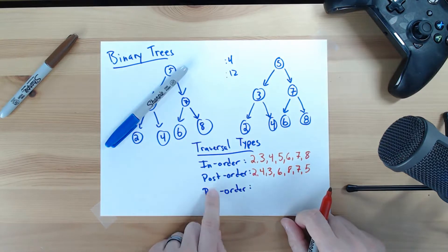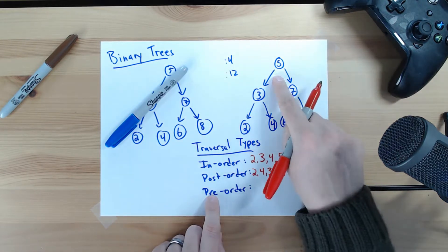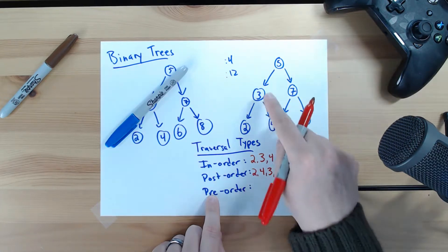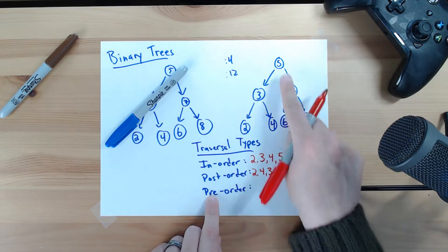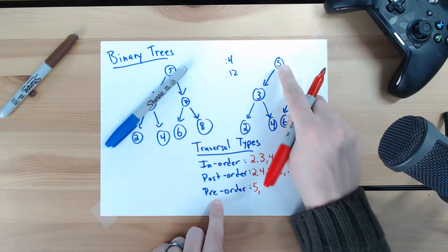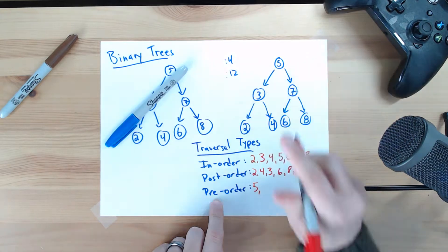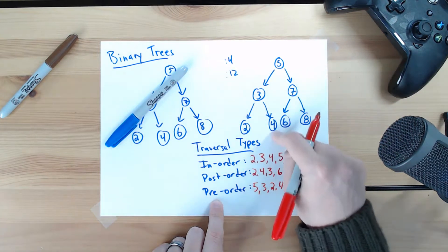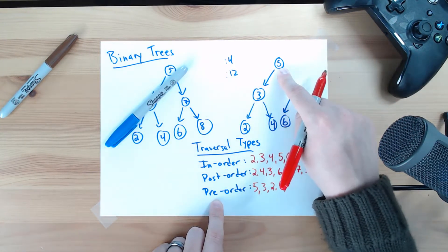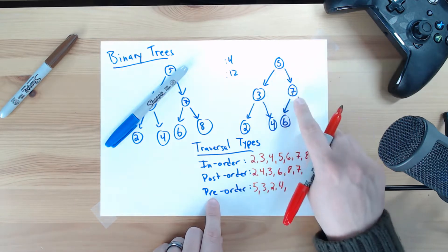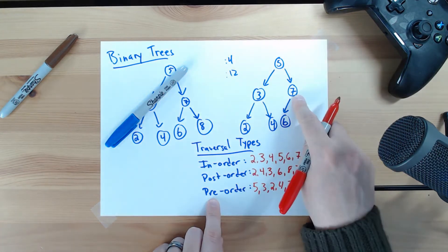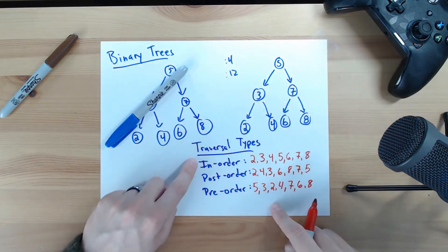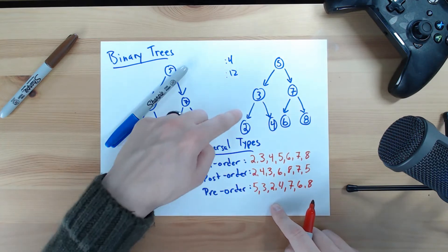Pre-order. Pre-order is the opposite of post-order — it prints the current node first, then the left, then the right. So if we were to do a pre-order print function for this tree, we would start by printing 5. The node prints itself first, then does the left: the 3 prints itself, then 2, then 4. The 5 has already printed because it's pre-order — it printed itself first. Then it does the 7: the 7 prints itself first, followed by 6, and then 8. This is in-order, post-order, and pre-order traversal on a binary tree structure.